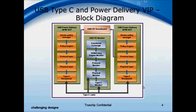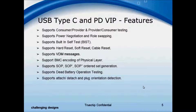Truechip's USB Type-C Verification IP has two BFMs — provider and consumer — both of which have a layered structure and monitor which follows the same approach and has a checker for every corresponding layer. The Truechip Verification IP has an advantage over other VIPs with fast and easy integration and plug-and-play support.